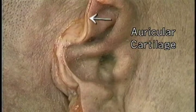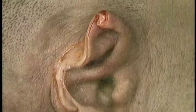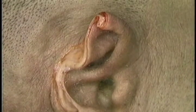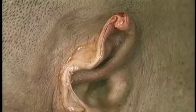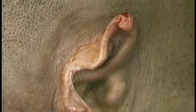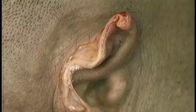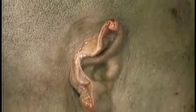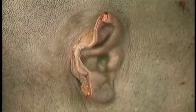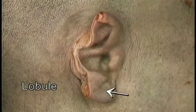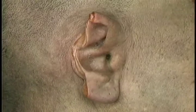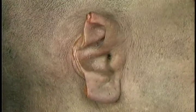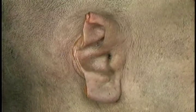We'll divide the auricle to see the cartilage. Here's the cut edge of the auricular cartilage — it's highly elastic. The skin of the auricle is attached to the cartilage closely on the front, less closely on the back. The lowest part of the auricle, the lobule, contains no cartilage. To look at the external auditory meatus, we'll remove the auricle and the surrounding skin.